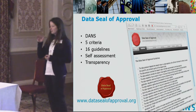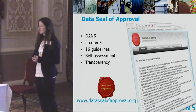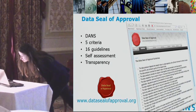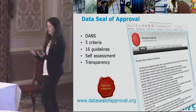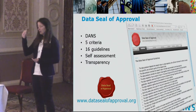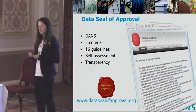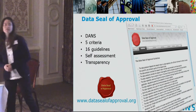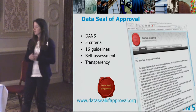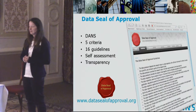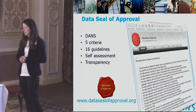Starting with the lowest level, we have the Data Seal of Approval. It consists of 16 guidelines. For example: the data producer provides the research data together with the metadata required by the data repository. It is a self-assessment and external review process. It helps your organization to set up procedures and protocols. We did this at DANS for our own archive, the online archiving system EASY, and it helped us get on the right path. The ADSS and many other organizations also hold the seal.